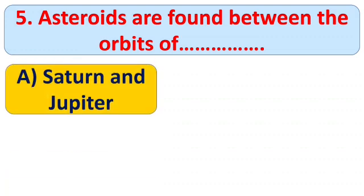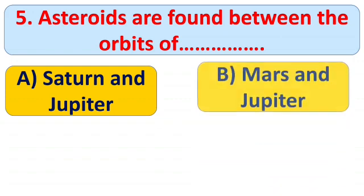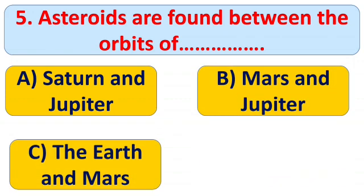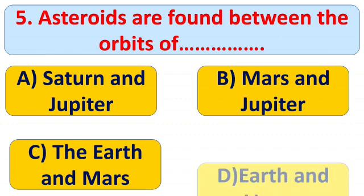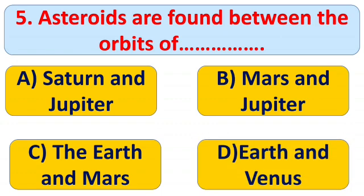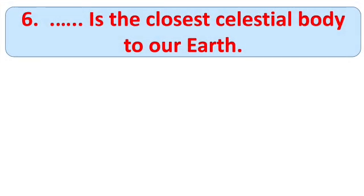Question number five: asteroids are found between the orbits of — options: A) Saturn and Jupiter, B) Mars and Jupiter, C) Earth and Mars, and D) Earth and Venus. The right answer is B) Mars and Jupiter. Asteroids are found between Mars and Jupiter; they are small rocky objects that revolve around the sun.